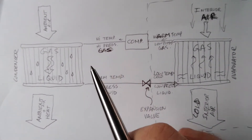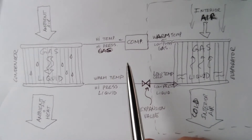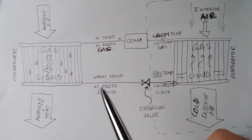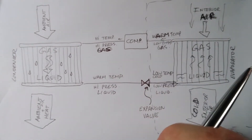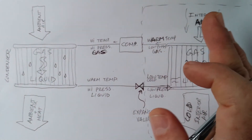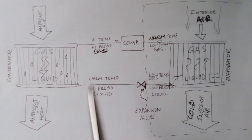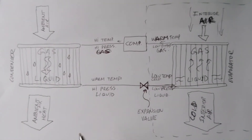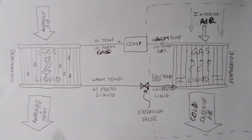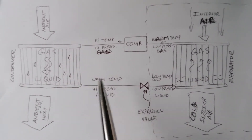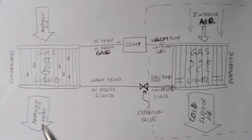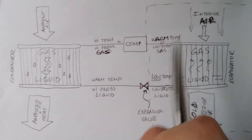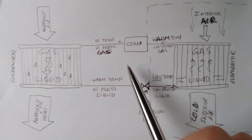One method uses a refrigerant — a gas specifically selected for this function. The other is called an air cycle system, used on bigger airplanes — we'll get to that in the second part of this video. We'll start with the refrigerant-based system now. This type is a closed loop system that uses a refrigerant gas like Freon, R32, or R12.